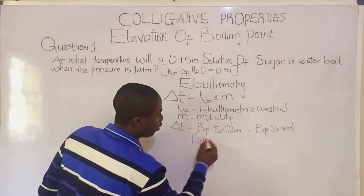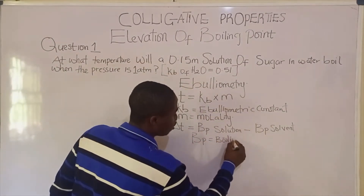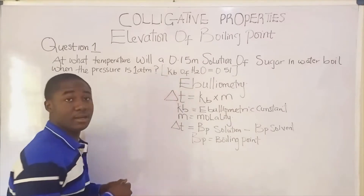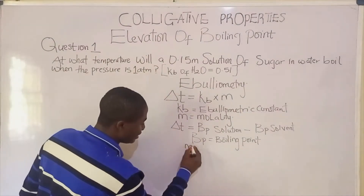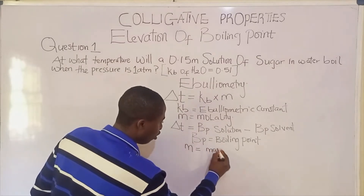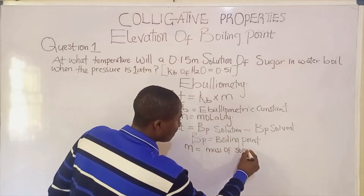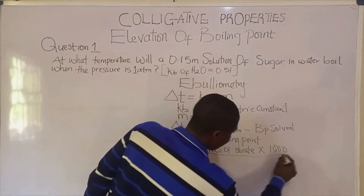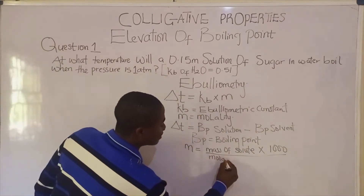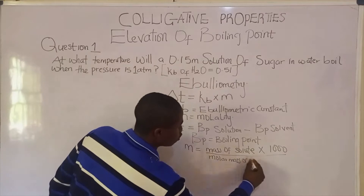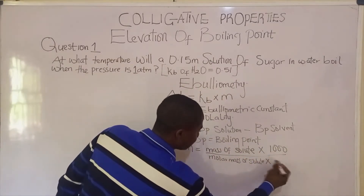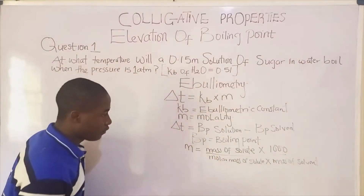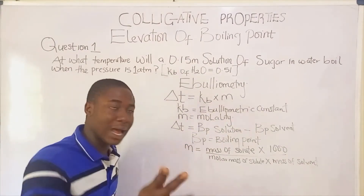BP is basically called boiling point. And the formula for solving molality is: molality equals mass of solute times 1000, divided by the molar mass of solute times the mass of solvent.